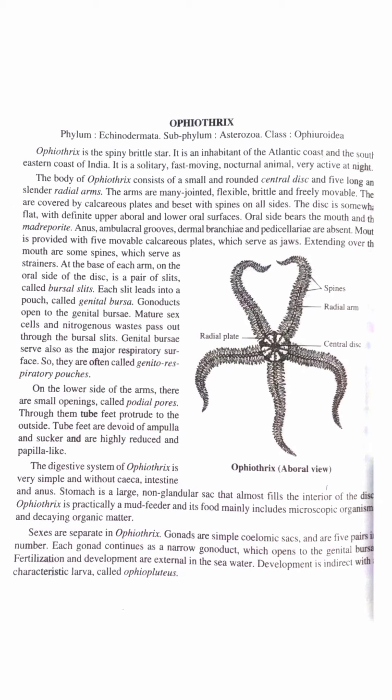The digestive system of Ophiothrix is very simple and without a caecum, intestine or anus. The stomach is a large non-glandular sac that almost fills the interior of the disc. Ophiothrix is partially a mud feeder and its food mainly includes microscopic organisms and decaying organic matter.